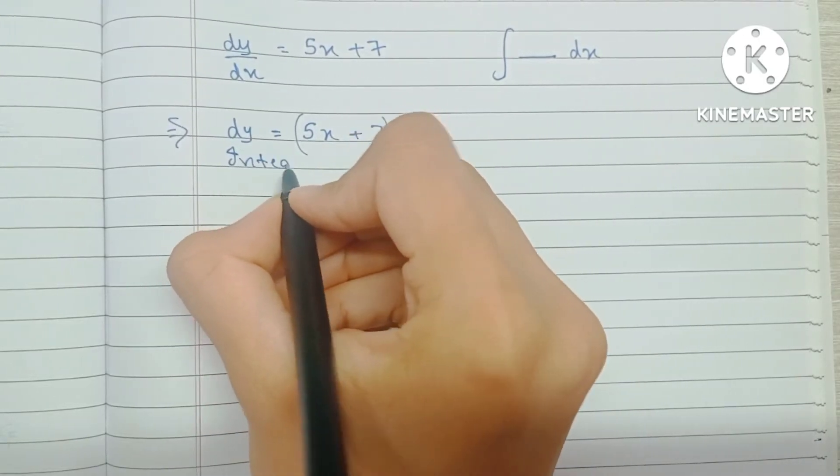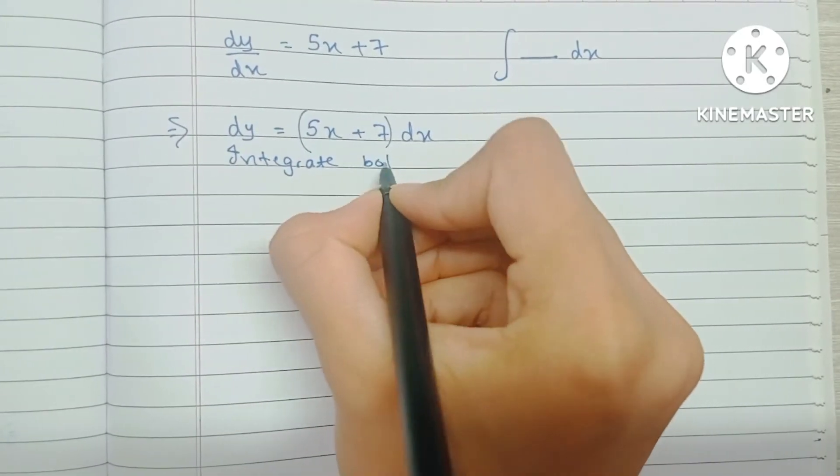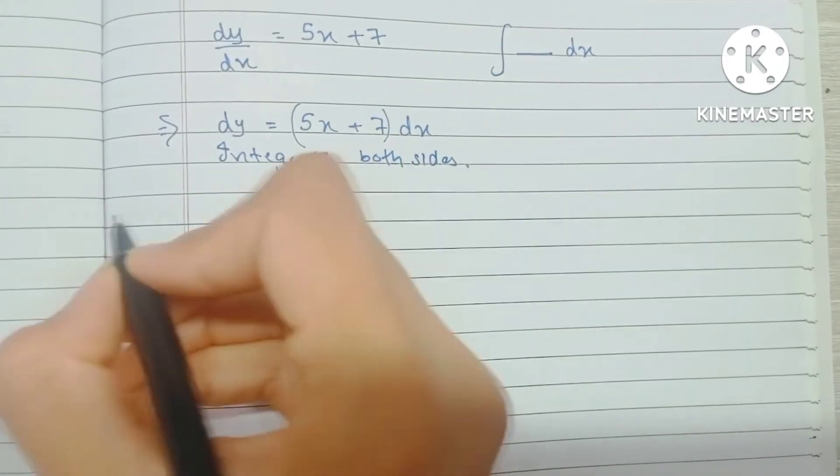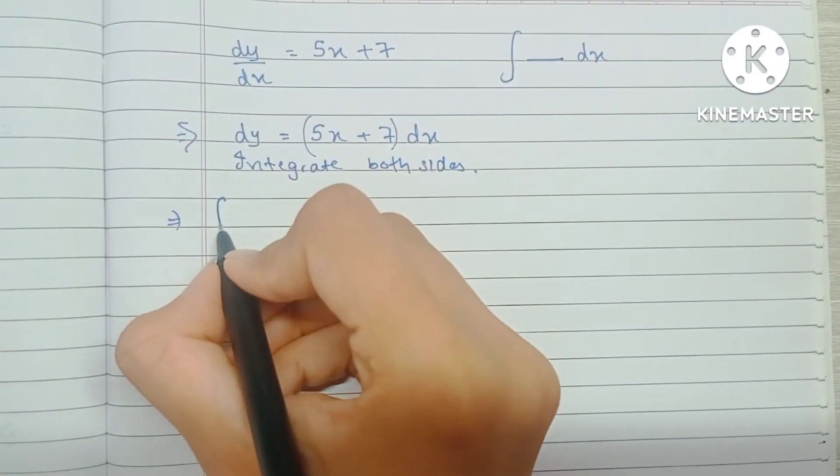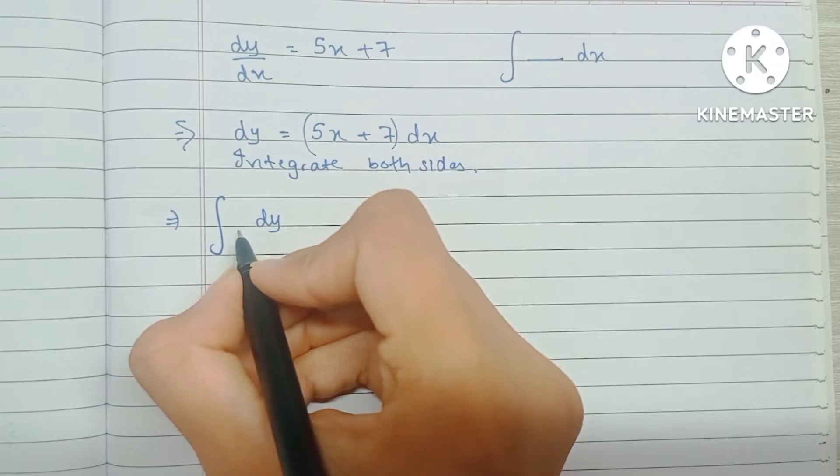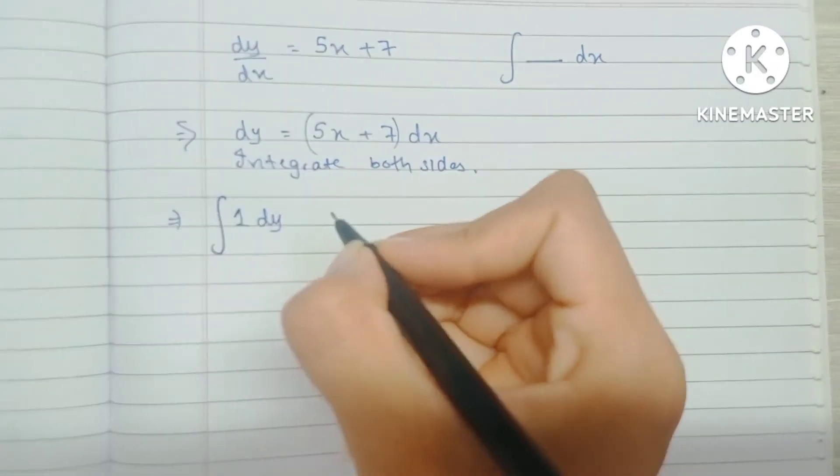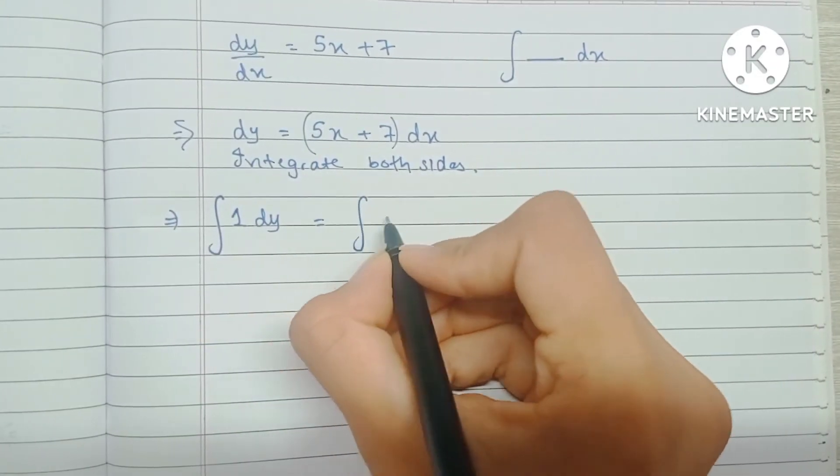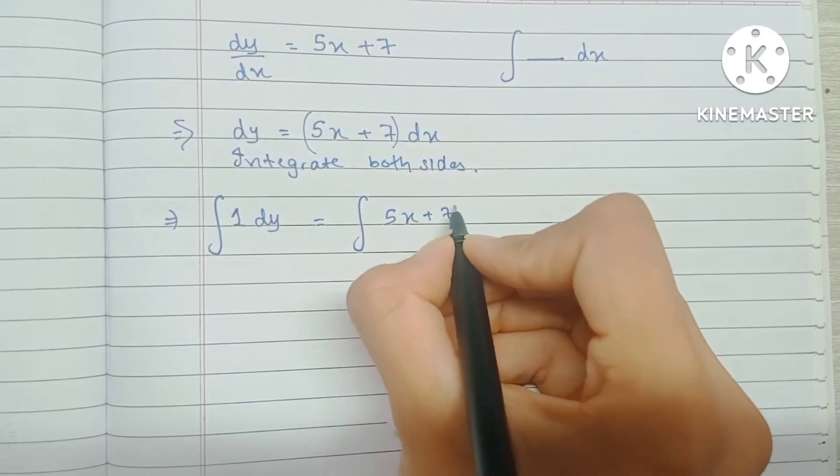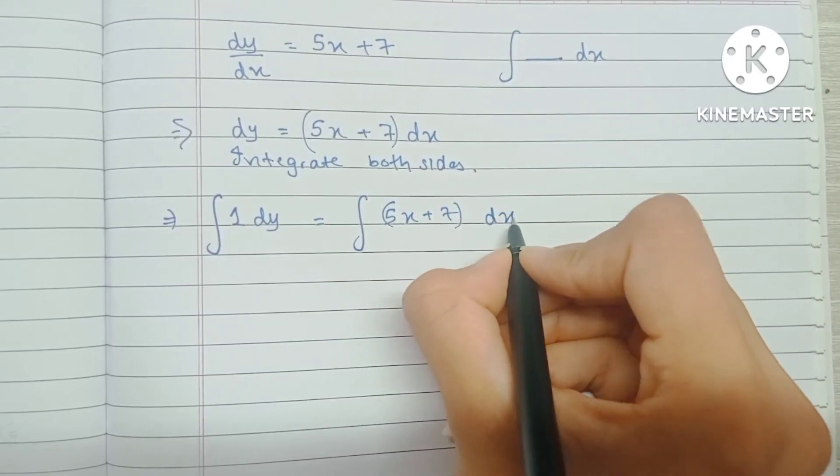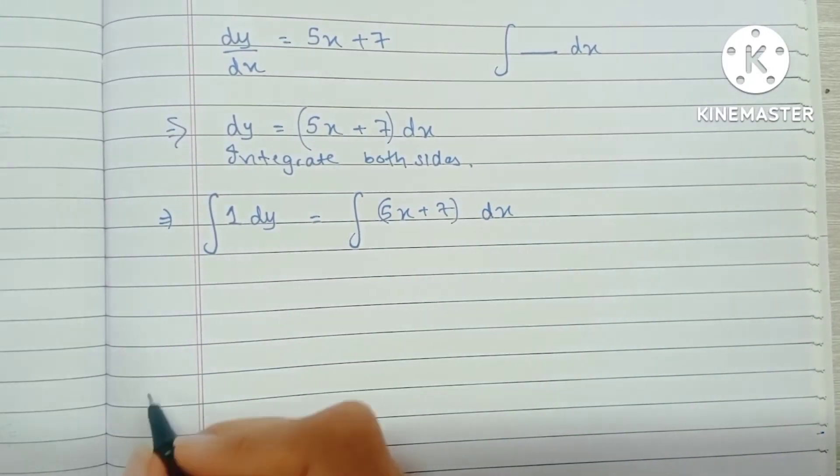Okay, so I'm going to integrate both sides. We have the integral of dy, or I can just write this as 1 into dy, which is equal to the integration of 5x plus 7, and this side is going to be integrated with respect to x.